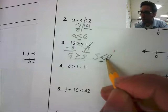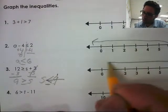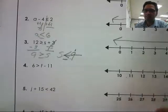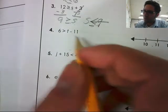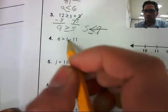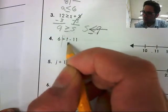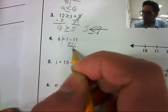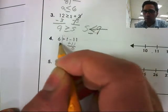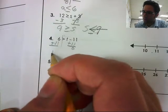All numbers including 9 will satisfy this inequality. All right, and number 4. Once again, my variable's on the right. I still need to solve for T. So draw my line. Negative 11 plus 11 gives us 0. Whatever we do to one side, we must do to the other. 6 plus 11 is 17.